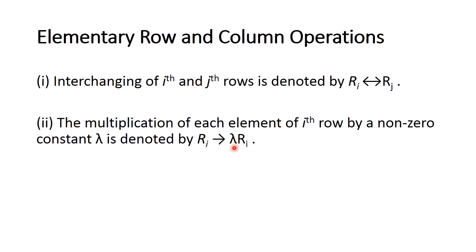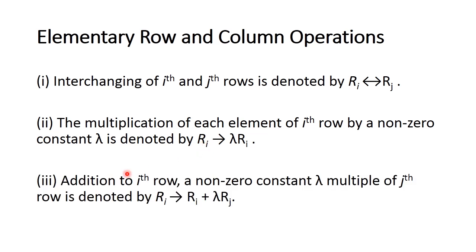The third one is addition to any row with a non-zero constant lambda multiple of another row, denoted by Ri to Ri plus lambda into Rj. Here Ri is the ith row, lambda is a non-zero constant, and Rj is the jth row. So these are the three elementary row and column operations.